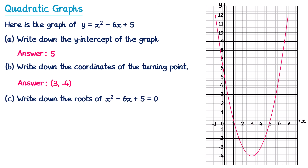Part c says: write down the roots of x squared minus 6x plus 5 equals 0. A root is just another name for the solution to an equation. Notice the left hand side is the same as the equation for the graph. The only difference is that our equation says equals 0 whereas the graph said y equals. So we're trying to find the x values that give a y value of 0. If we look at the graph, y will be 0 when we're on the x-axis. The graph crosses the x-axis at two points, so when x equals 1 and x equals 5, y equals 0.